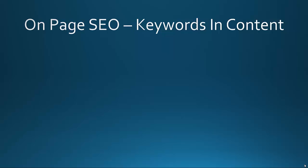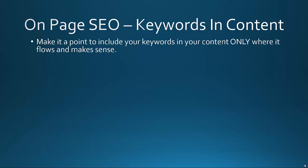Now we're going to talk about keywords in your content — this video is focused on content-related on-page SEO factors. Content is king. It's the most important factor and what people are out there seeking on the internet. Make it a point to include your keywords in your content only where it flows and makes sense. Quit trying to get the perfect keyword density — that is a thing of the past. There's no perfect keyword density; that ship has sailed along with many other outdated SEO methods.